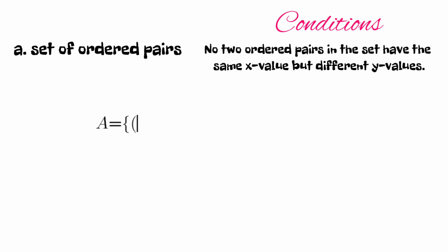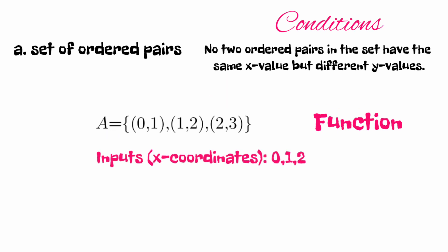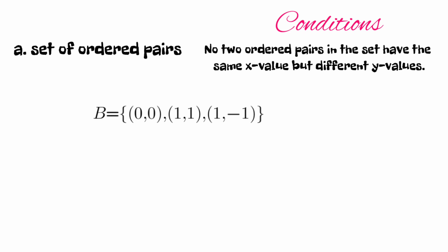For example, set A with ordered pairs (0,1), (1,2), (2,3) is a function. If you look at the inputs, we have 0, 1, and 2, so it is non-repeating. Therefore, this example is a function. Set B is not a function because we found two ordered pairs, (1,1) and (1,-1), that have the same input or x value, which should be a non-repeating quantity. So this is not a function.